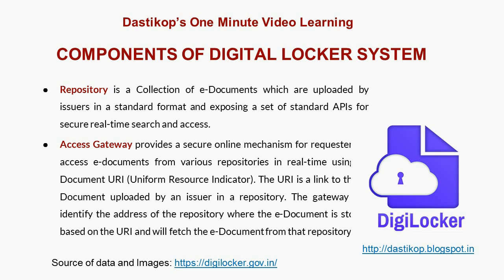The access gateway provides a secure online mechanism for a requester to access e-documents from various repositories in real-time using a document URI — that is, Uniform Resource Indicator. The URI is a link to the document uploaded by an issuer in a repository. The gateway identifies the address of the repository where the e-document has been stored based on the URI and fetches the e-document from that repository.